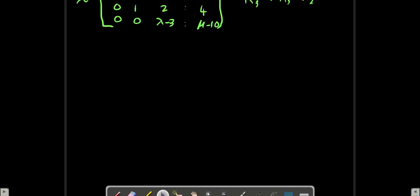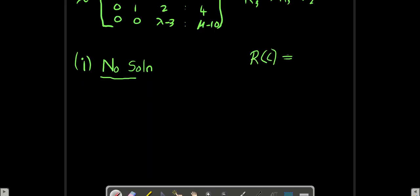So we have our augmented matrix reduced into echelon form. Now let's write the answer for the first part — we should have no solution. The condition for no solution is rank of C should not equal rank of A. We know C will be a bigger matrix than A. So if there is no solution, rank of C will be bigger than rank of A.